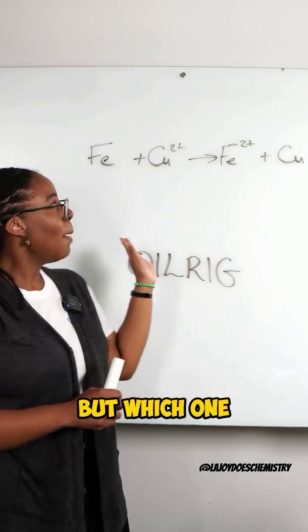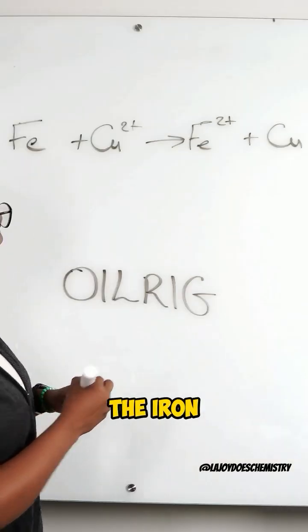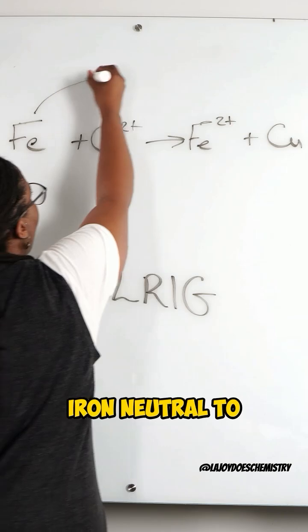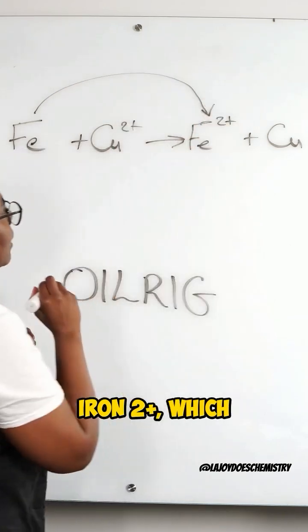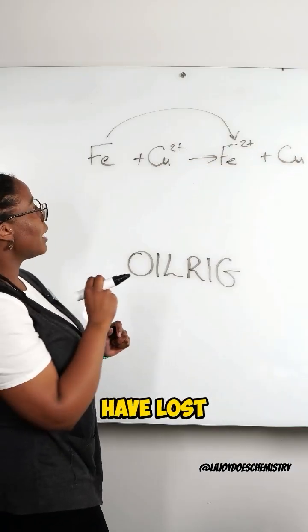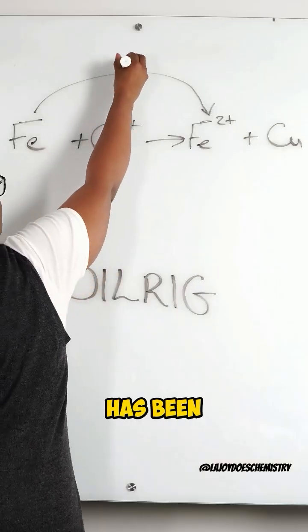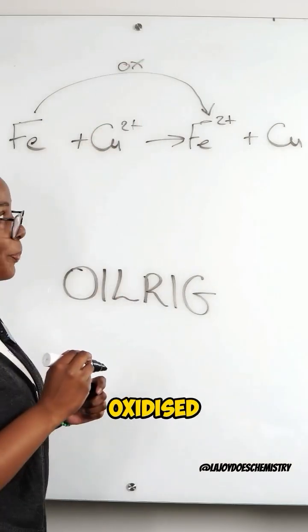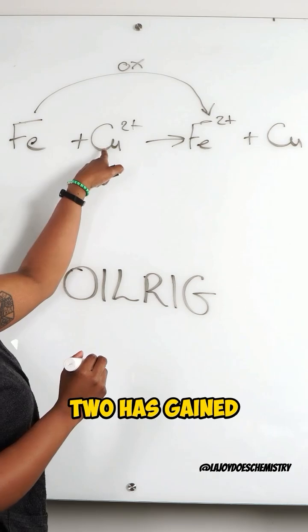being oxidized, but which one is which? Let's start with the iron. We're going from iron neutral to iron two plus, which means that we have lost electrons, so the iron has been oxidized. And our copper two plus has